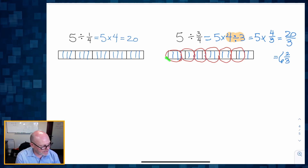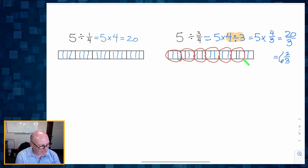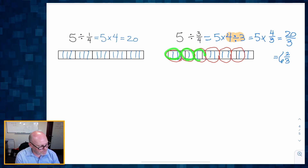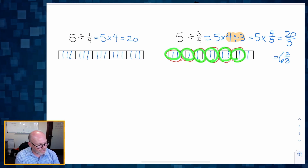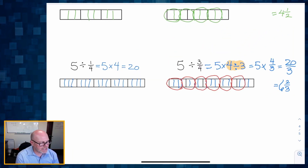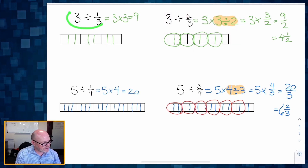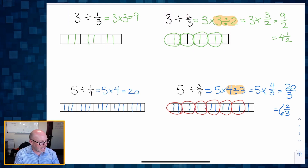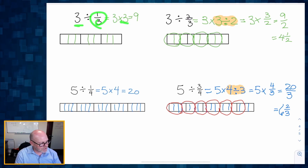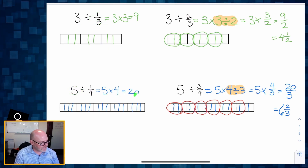Sure enough, we can see it: one, two, three, four, five, six groups, and two little pieces left over. Since we were circling groups of three, we get six and two thirds. So the pattern is emerging: if we're dividing by a unit fraction, it's pretty easy — three times three gives nine, or five times four gives twenty.